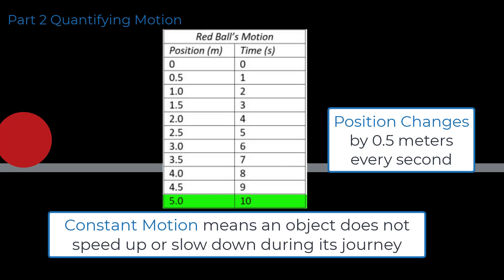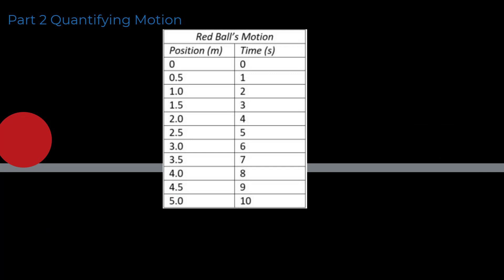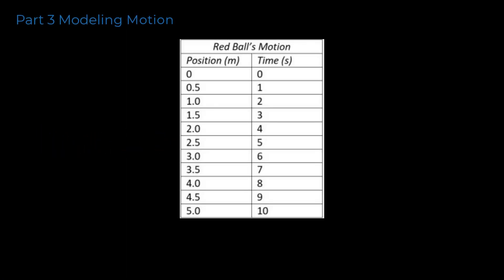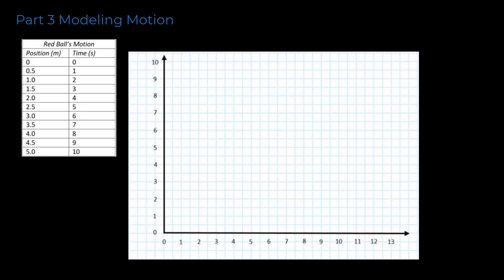There is another way we can envision this data to make more meaning of the red ball's motion. With positions and times recorded, we can model the motion of the red ball with a graph. We will use a position versus time graph. On this graph, the x-axis records the time of travel for an object in motion, and the y-axis records the position of the object in motion. We place a dot for each position recorded at its corresponding time.